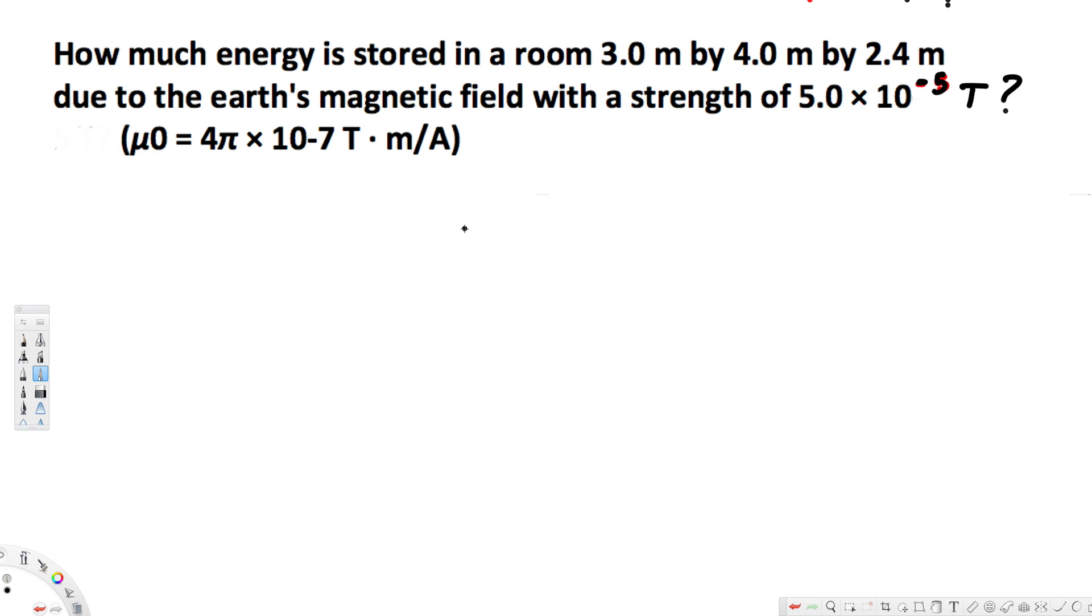This question is asking how much energy is stored in a room 3 by 4 by 2.4 due to earth's magnetic field with a strength of 5 times 10 to the power of minus 5 tesla. Here we have the volume and the magnetic strength provided and the question is asking to find out the energy stored in a room.